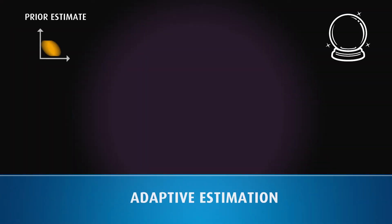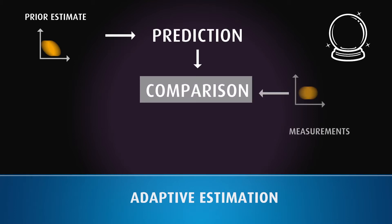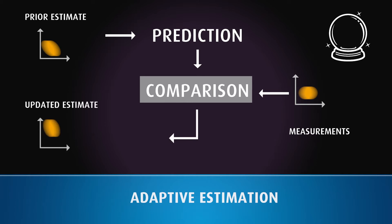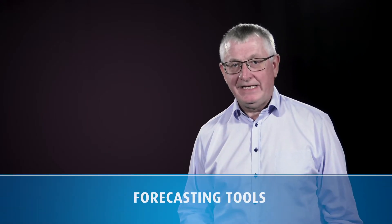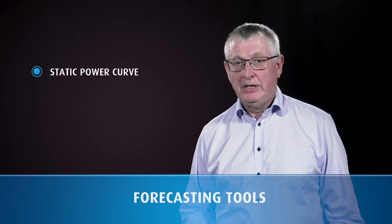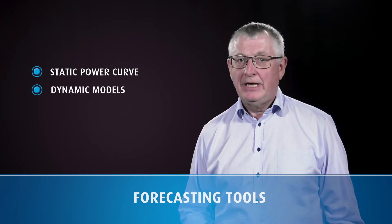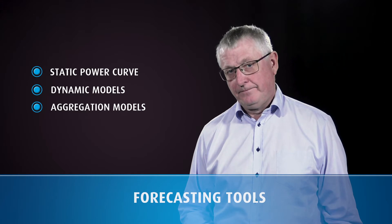An adequate forecasting system may use adaptive and recursive estimation to handle these issues. This is described in Chapter 10 of my book Time Series Analysis. A typical tool consists of static wind farm power curve models for the dynamics and models for aggregation to larger areas. A wind turbine power curve describes how the wind power production depends on the wind speed at hub height.